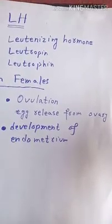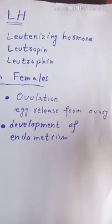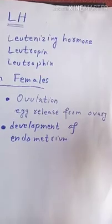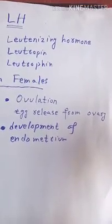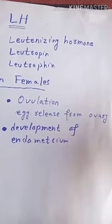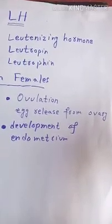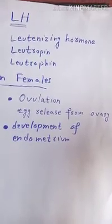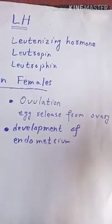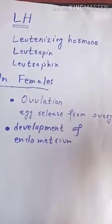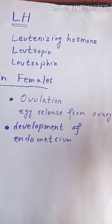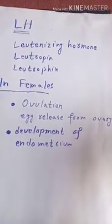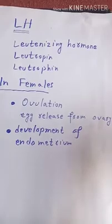If little or no luteinizing hormone is produced in females, there will be no release of the egg from the ovary, which will result in no conception. After ovulation, a decrease in luteinizing hormone means there will be no development of the endometrium and no pregnancy will occur.